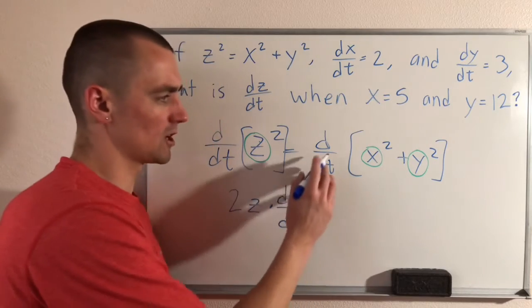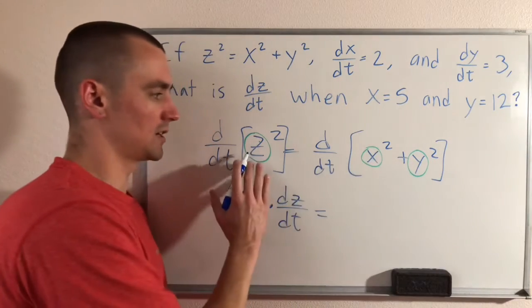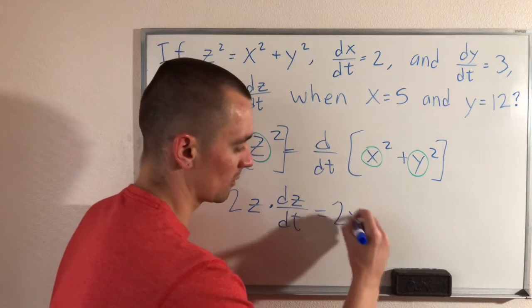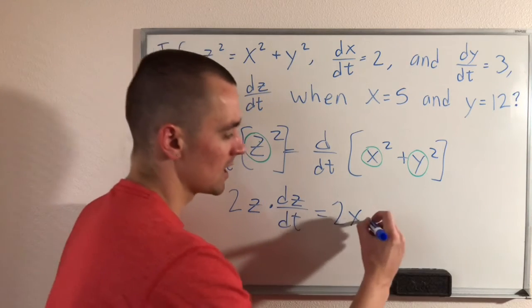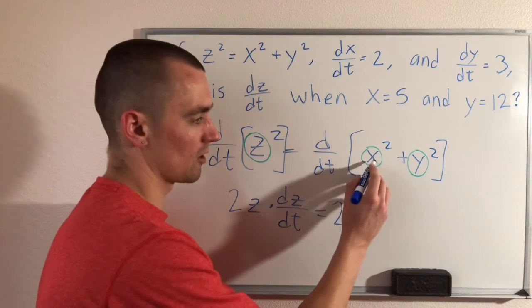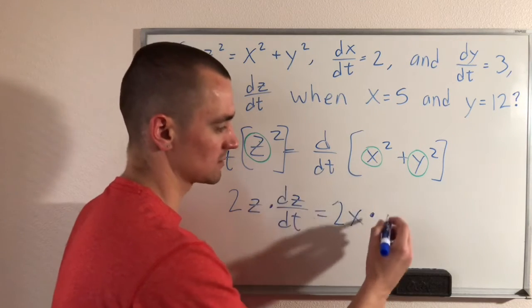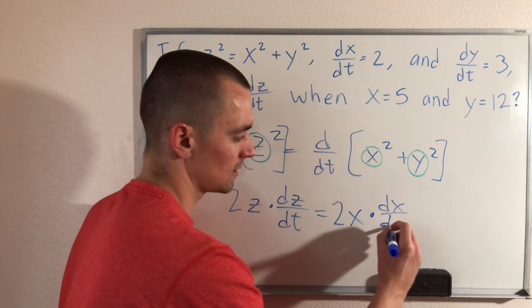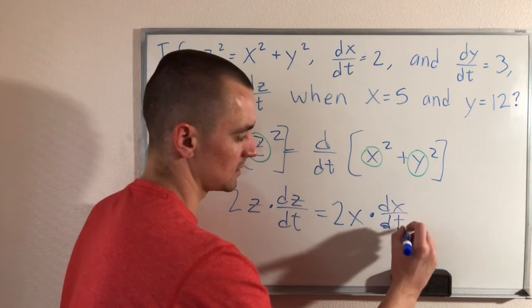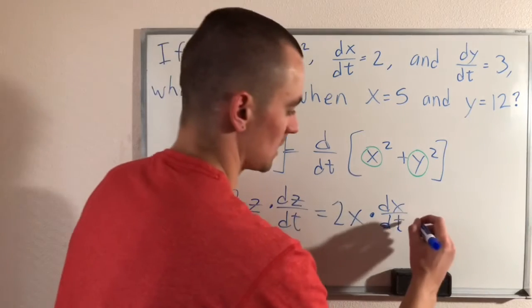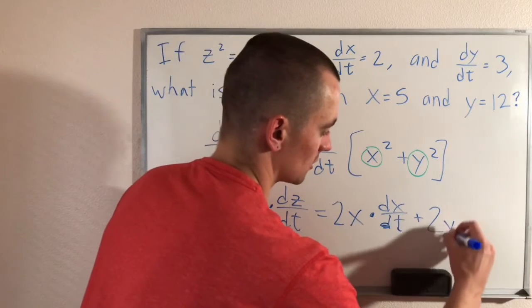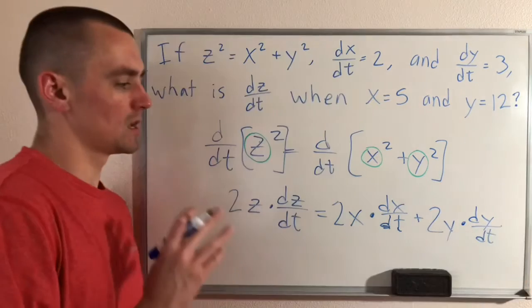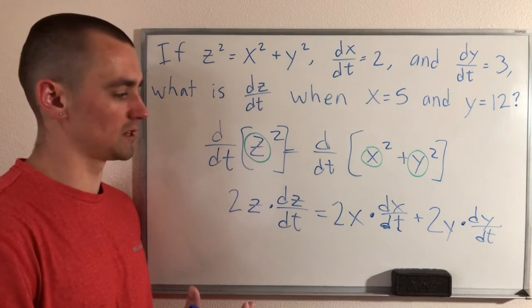And then same idea over here. Each of these are going to be treated just like this was. We're going to bring the two down in front, lower the power by one, which just leaves us with x, and then multiply by the derivative of our inside function, which is x. So the derivative of x with respect to t is dx/dt. And then same thing here. We're going to bring the two down in front, lower the power by one, multiply by the derivative of y. That's having applied the implicit differentiation.